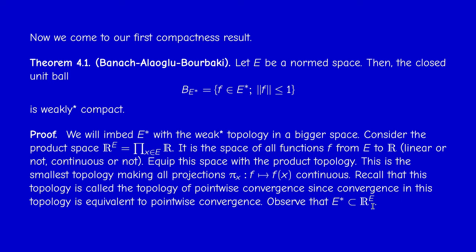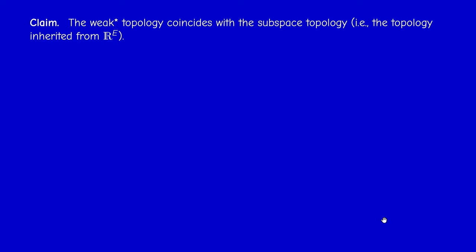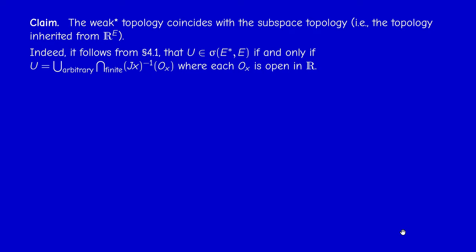This is not terribly difficult; there are at least two ways of proving this. Going back to the characterization of open sets: what does it mean for a subset of E* to be open in the weak star topology? It means it is an arbitrary union of basis elements, where each basis element is a finite intersection of sets of the form J_x^{-1}(O_x), where each O_x is open in R. This follows from the discussion in Section 4.1.